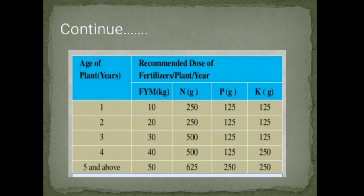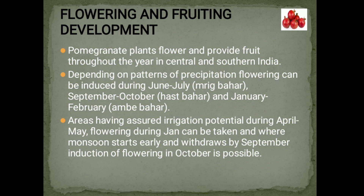Flowering and Fruiting Development. Pomegranate plants flower and produce fruit throughout the year in Central and Southern India. Depending on patterns of precipitation, flowering can be induced during June–July (Mrig Bahar), September–October (Hast Bahar), and January–February (Ambe Bahar). In areas with assured irrigation, flowering during January can be taken, and where monsoon starts early and withdraws by September, induction of flowering in October is possible.